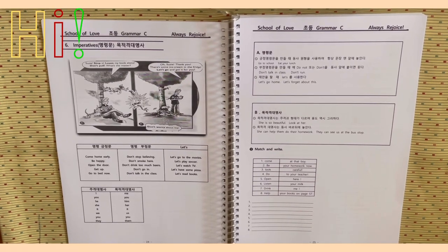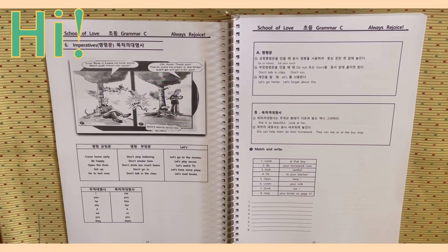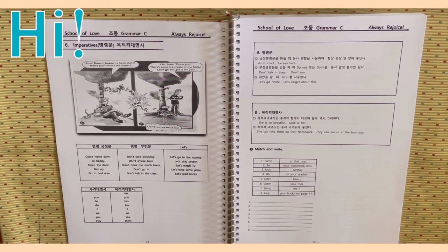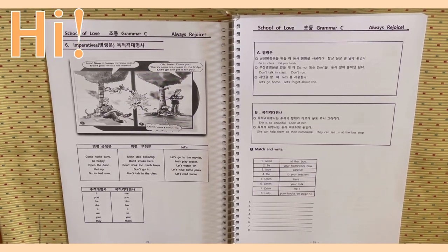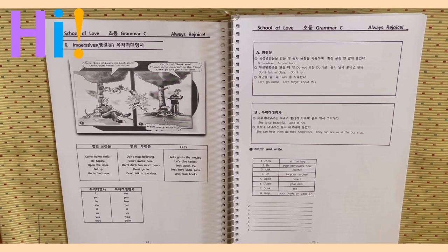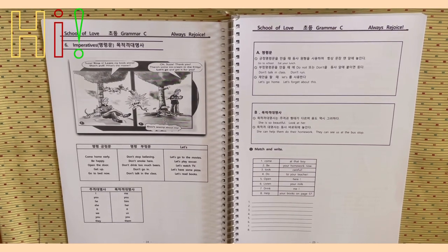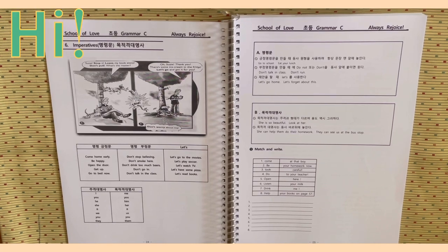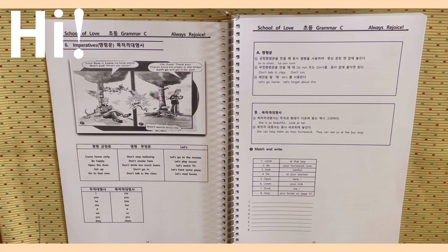Come home early. Don't stop believing. Let's go to the movies. 청유문, let's be happy. Don't smoke here. Let's play soccer. Open the door. Don't drink too many beers. Let's watch TV. Get up. Don't go in. Let's have some pizza. Go to bed now. Don't talk in the class. Let's read books.